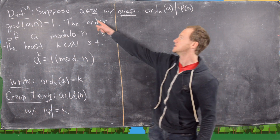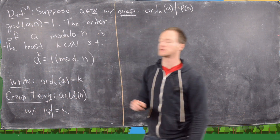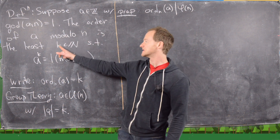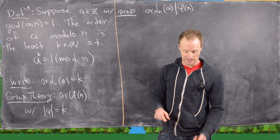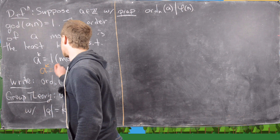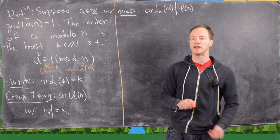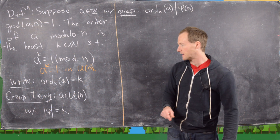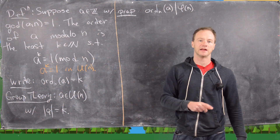So let's look at this definition first. We've got an integer a that is relatively prime to a natural number n, so their GCD is one. Then we say the order of a modulo n is the least natural number k such that a to the k is congruent to one mod n. We generally write the order sub n of a equals k in this case.